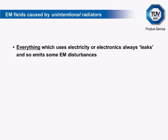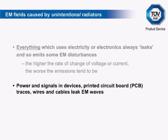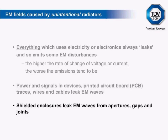Now some examples of unintentional radiators. Everything which uses electricity or electronics always leaks and so emits some EM disturbances — the higher the rate of change of voltage or current, the worse the emissions tend to be. Power and signals in devices, printed circuit board traces, wires and cables also leak EM waves, and shielding enclosures leak EM waves from apertures, gaps and joints. EMC issues from unintentional radiators are just as relevant as issues from intentional ones, and EMC testing has evolved to include tests which cover all expected eventualities.